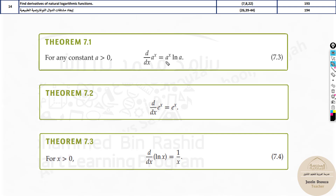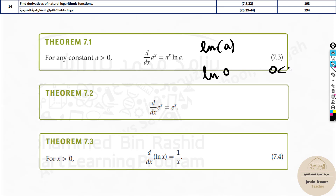Over here, what does this 'a' mean? A is any constant number, greater than 0. If you have 0, it doesn't make sense — it will be 0 itself. And the reason is: ln over here has a domain — you can't have 0 or any negative numbers. X can't be less than 0. So that's why it should be any positive number.